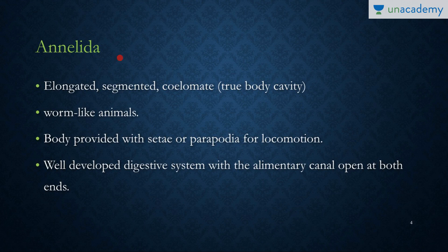Annelida can also be called the segmented worms. The name Annelida comes from the term 'annulus,' which means ring. These are elongated, segmented, coelomate organisms which are worm-like.